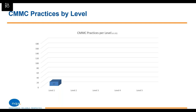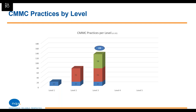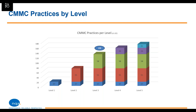Level one probably aligns with that initial government goal of being cost-effective — there are only 17 controls there, and it basically boils down to basic cyber hygiene. As you go up the scale, more and more controls get added. I want to pause at level three because I think the two critical levels are going to be level one and level three — most organizations will fall into one of those two categories. Level three has 130 controls, most of which are based on 800-171. Levels four and five are going to be relatively limited, probably thinking more along the lines of prime contractors, not subcontractors. Level three is kind of where you want to have your focus.